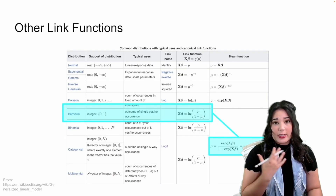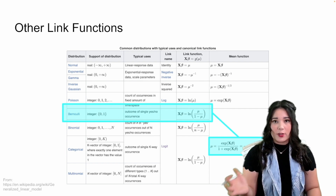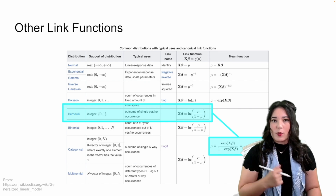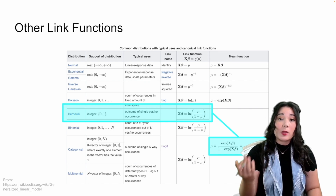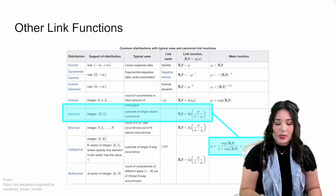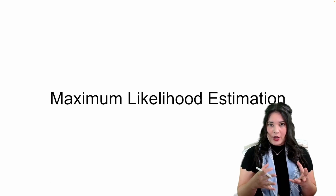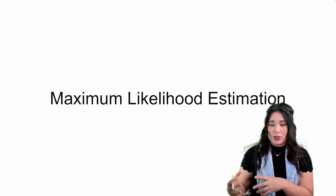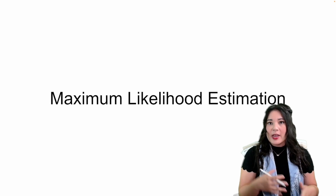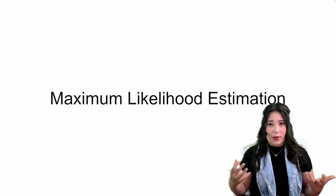We're talking about a very specific link function — the one used for logistic regression — but this is not the only link function you can use. It's the only one we'll focus on in this class, but there's a table from Wikipedia showing some common link functions including the one we just derived. Now that we know how to apply link functions to use linear regression to predict a probability, let's talk about how we actually find the parameters of our model.